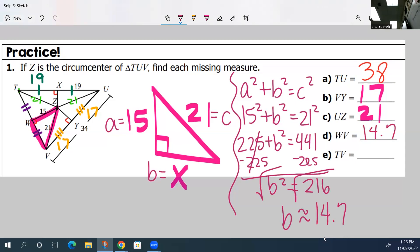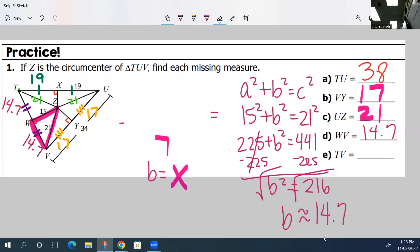Now if this is 14.7, that means that this is also 14.7 because it's a perpendicular bisector and bi means two. So it splits it into two congruent parts.